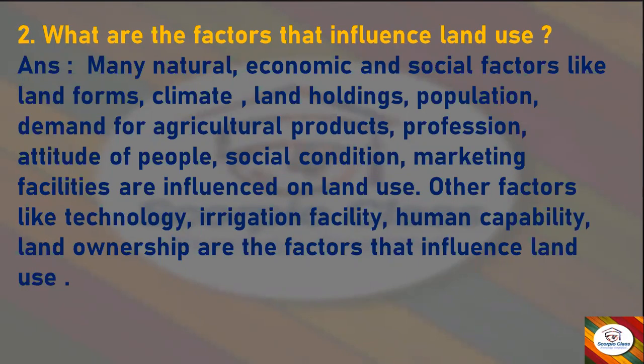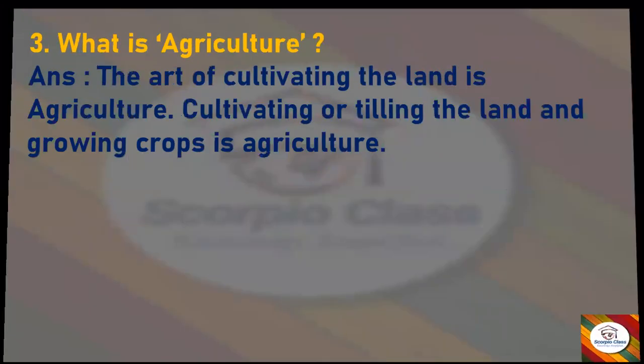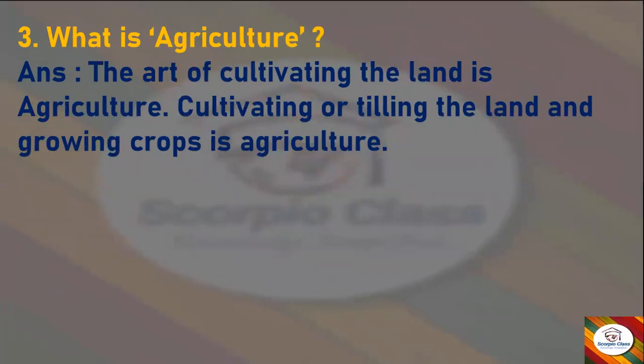Answer: Many natural, economic, and social factors like landforms, climate, land holdings, population, demand for agricultural products, profession, attitude of people, social conditions, marketing facilities influence land use. Other factors like technology, irrigation facility, human capability, and land ownership in agriculture are also factors that influence land use.